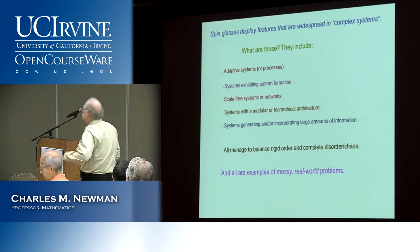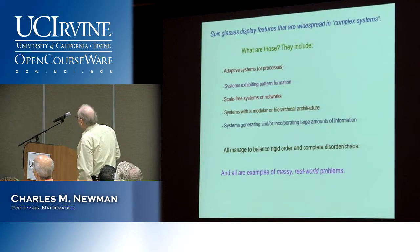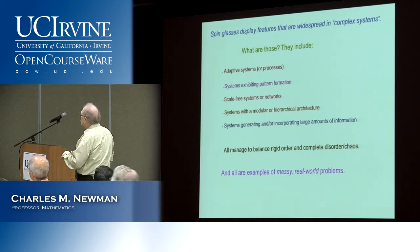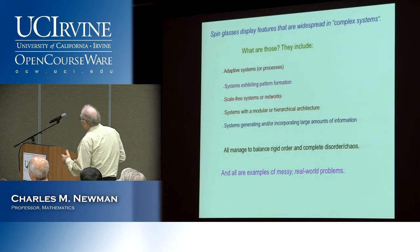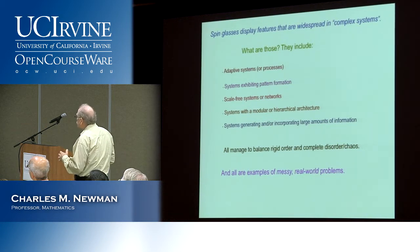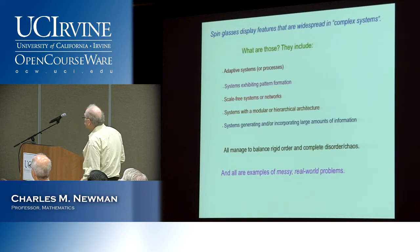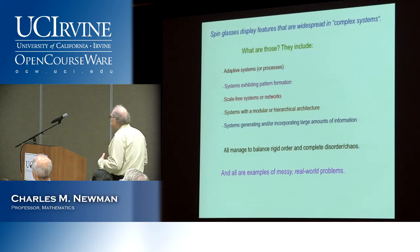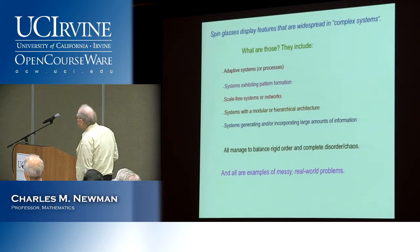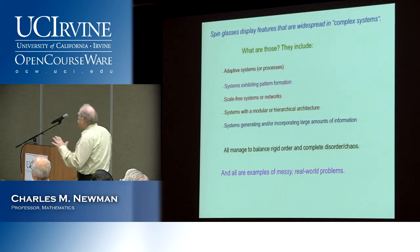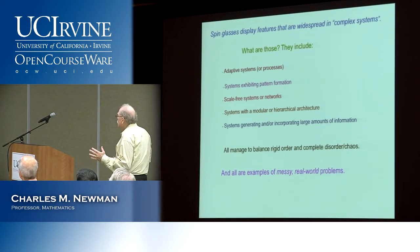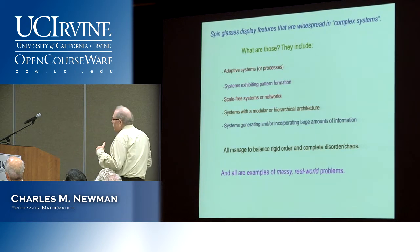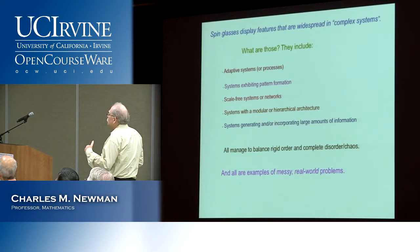The story I'm trying to present is that spin glasses display features which are widespread in various kinds of complex systems: adaptivity, pattern formation, scale-free properties, hierarchical structures, and systems that generate or incorporate large amounts of information. They seem to operate somewhere in the border region between complete order and complete chaos, and they have those things in common with many real-world messy-type problems. That's why some of the ideas that originated with spin glasses are being used in other places.